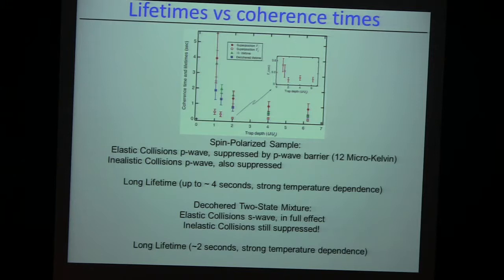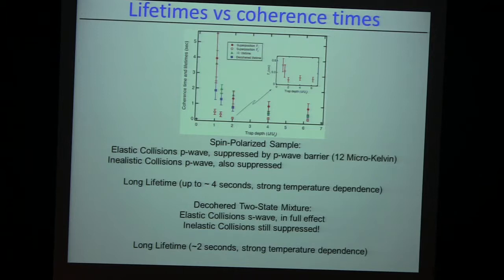There's a cute thing hidden in this graph. The fact that we see a lifetime even of the decoherent mixture of several seconds means that the two-state mixture of two different nuclear spins lives. So we have the same beautiful situation as in lithium, where a two-state mixture of lithium atoms lives because three-body collisions are suppressed — the third guy has to have either up or down spin, and that's suppressed by P-wave. So that's wonderful, because it means we can hopefully study even S-wave interactions in a long-lived gas.